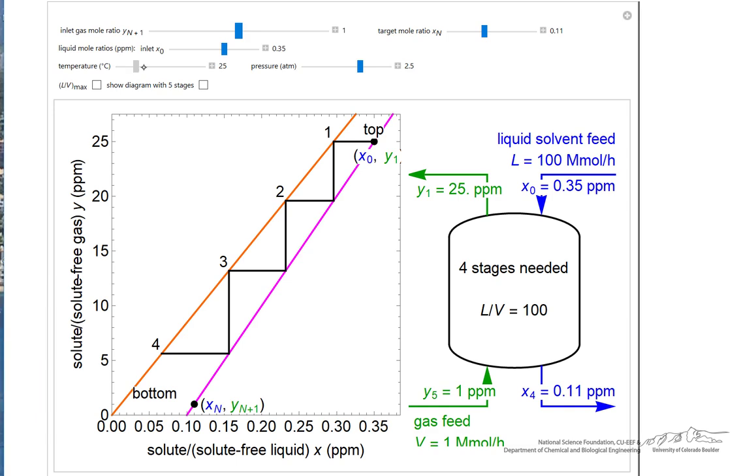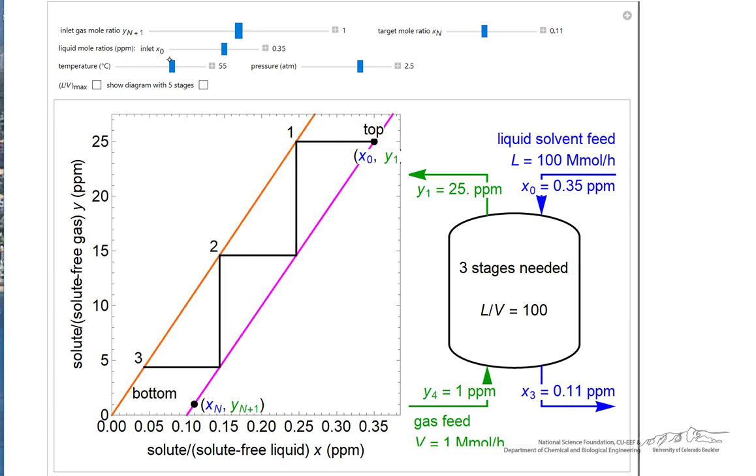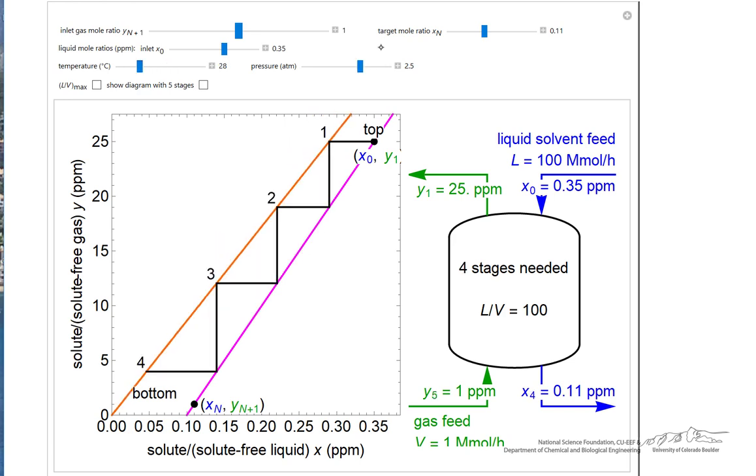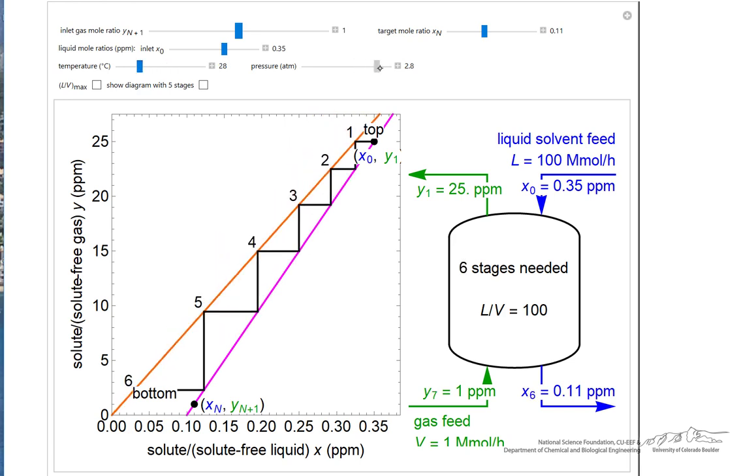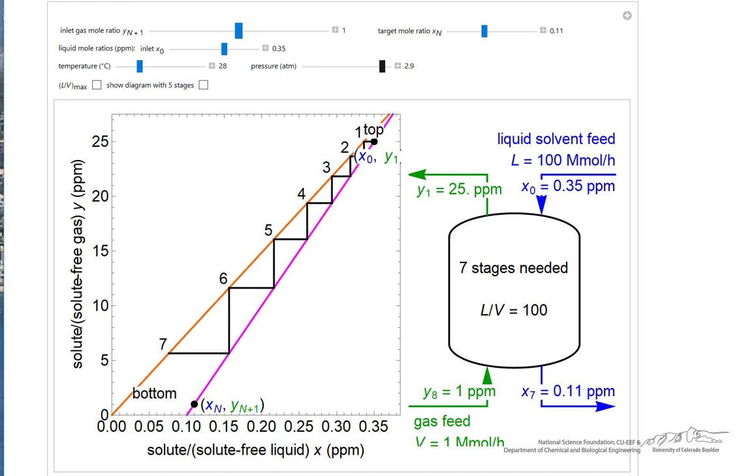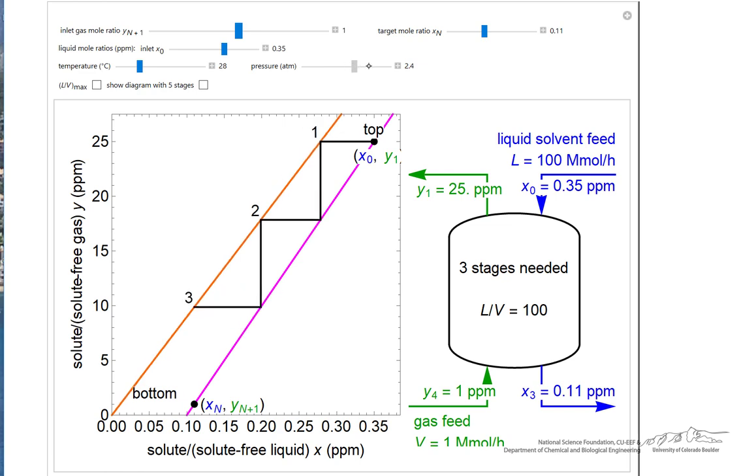Here's the interactive simulation. For example, we can increase the temperature, and this decreases the number of stages because we're lowering the solubility in the liquid phase, and that's what we want to do is get the solute out of the liquid phase. We can also increase the pressure. Now that takes more stages because we're increasing solubility in the liquid phase. We're changing the slope of that equilibrium line.